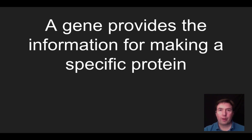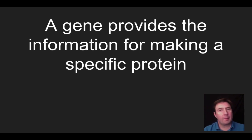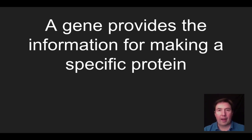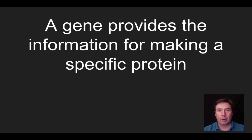Hello, everybody. This is Mr. Matthew again for Honors Bio Video 5-3, and we're going to talk about how a gene provides the information for making a specific protein in this video. We'll talk basically about the process of transcription and translation, discuss what happens in a eukaryote versus a prokaryote, and then some of the specific details of how within a eukaryote you will have introns and exons that take place before you get to translation.